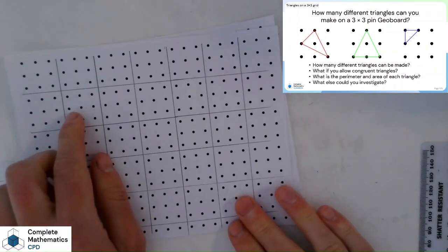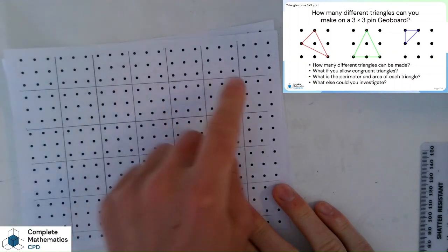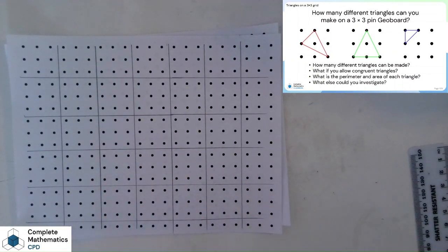And then I'll set pupils off on trying to draw as many different triangles as they can. And can they label them equilateral, isosceles, scalene and so on.